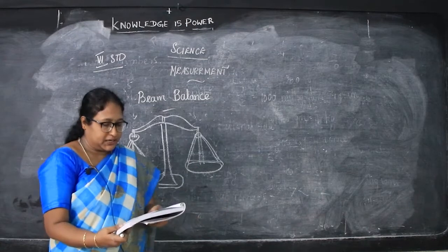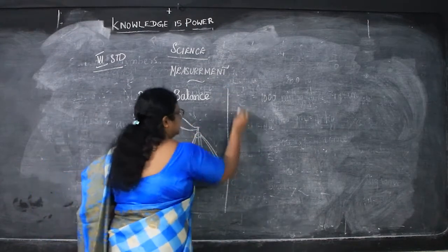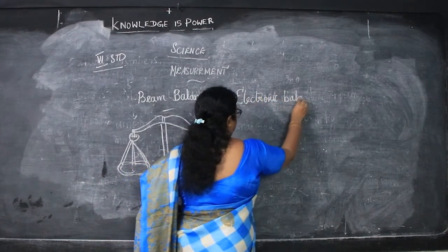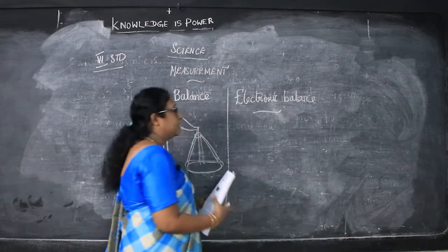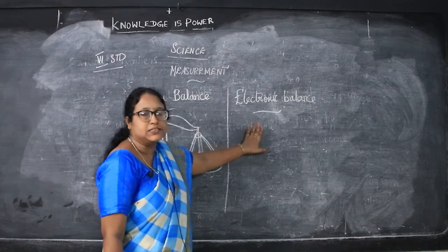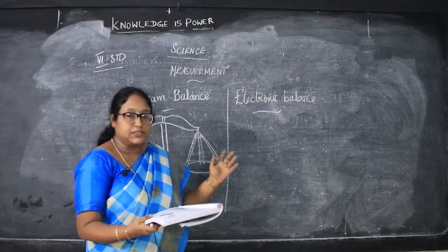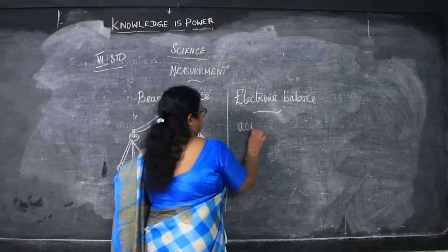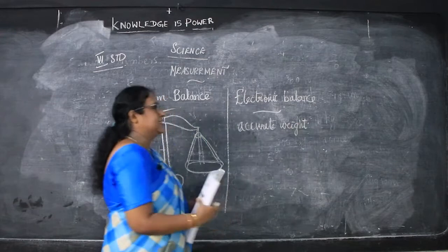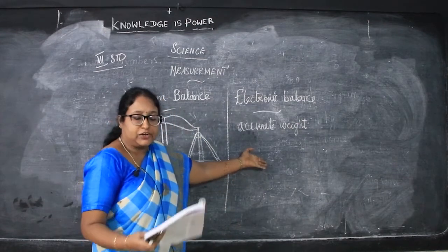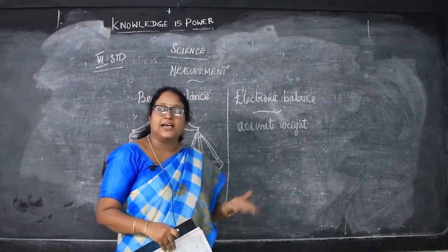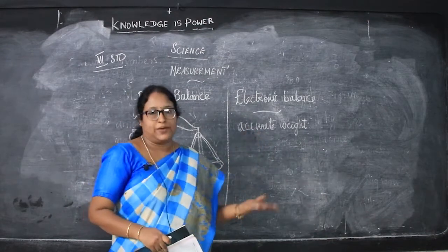Nowadays electronic balance is used. This electronic balance we can see in provisional shops or in jewelry shops. It is used to measure the accurate weight of an object. You can see it in laboratories for weighing chemicals, and it can also be used to weigh food, grocery items, as well as jewelry.